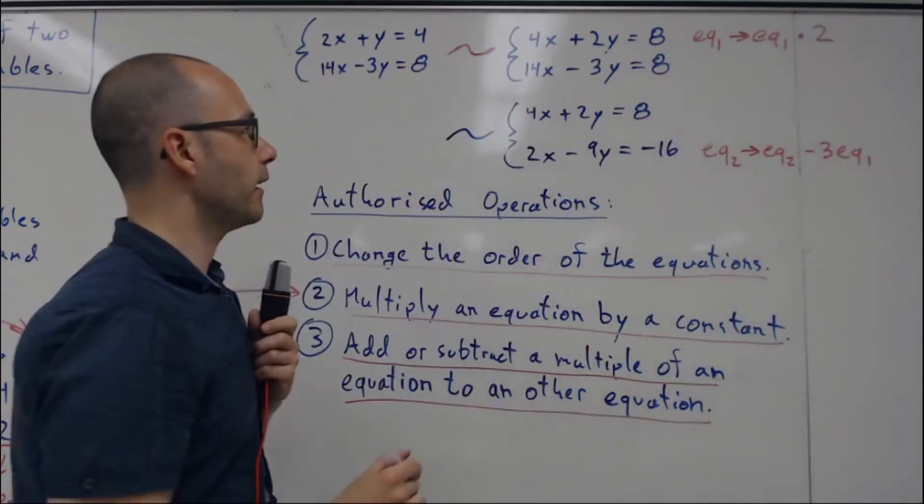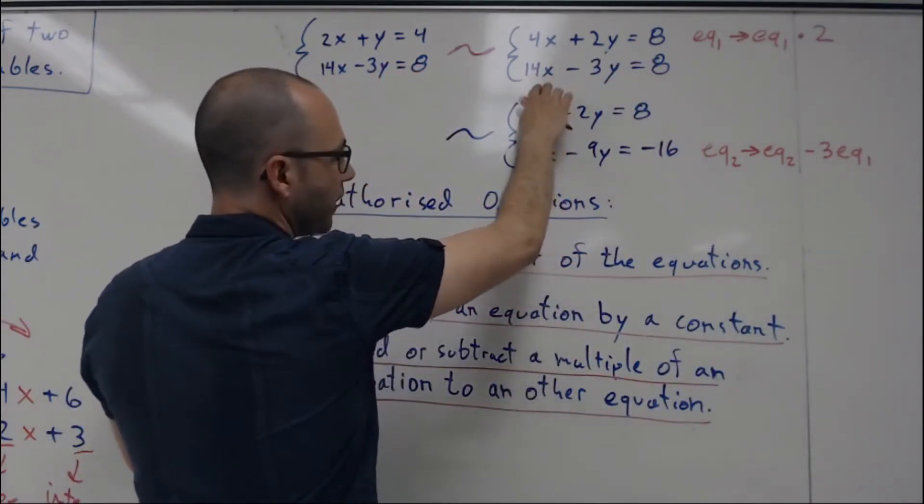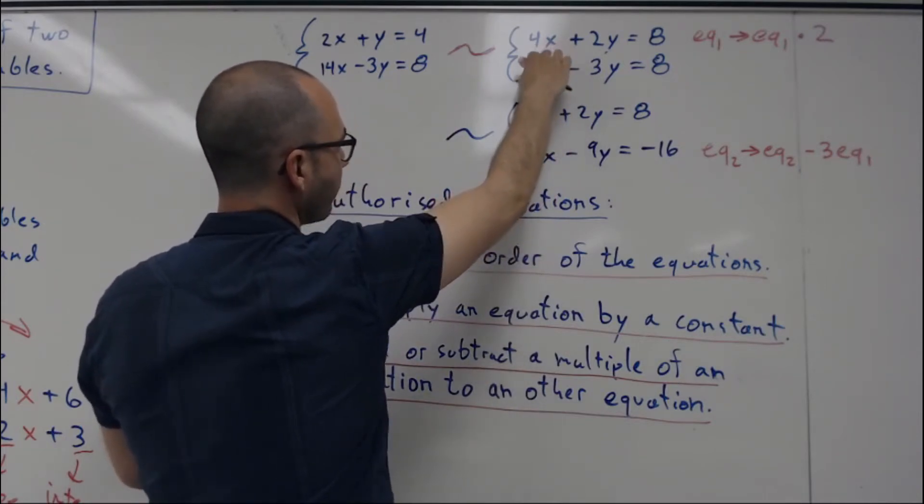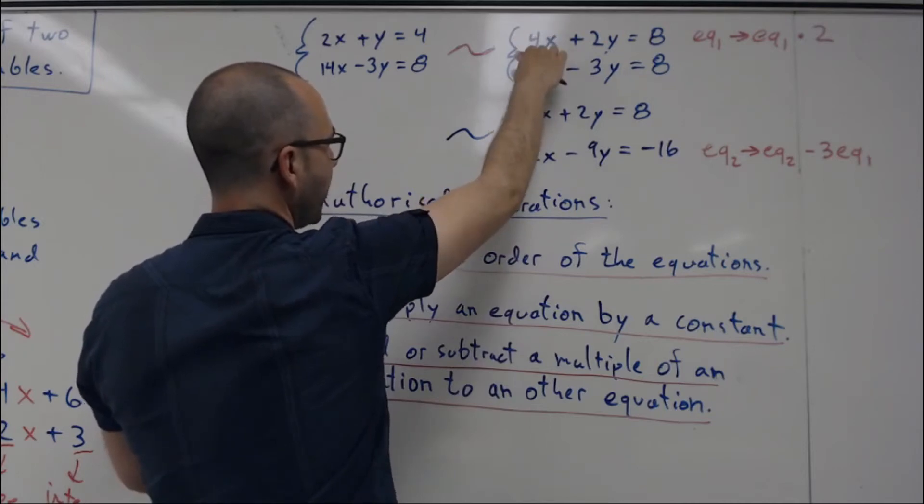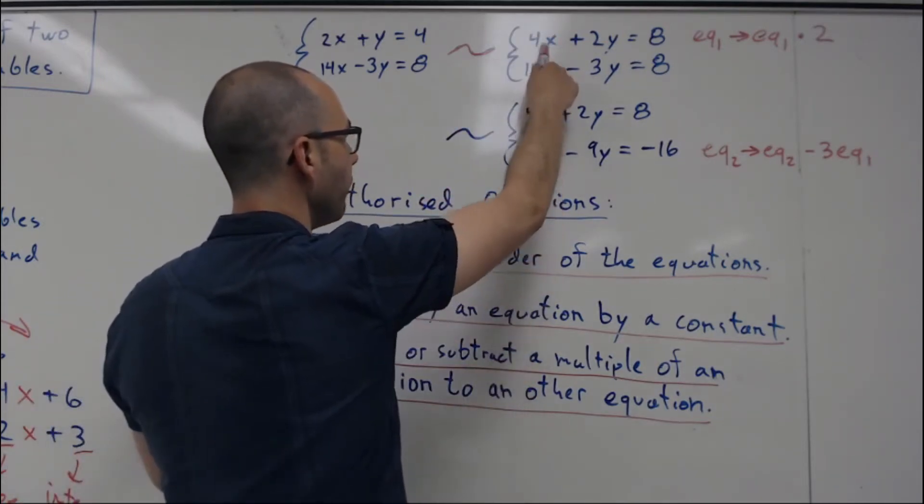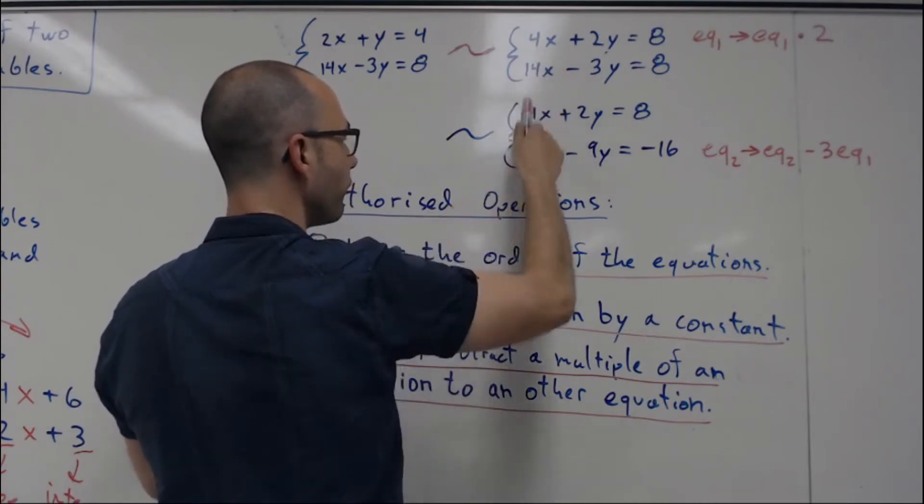So I take my 14x here and I minus 3 times that 4x. 3 times 4 is 12, of course. So I'll have 14 minus 12, which is 2.